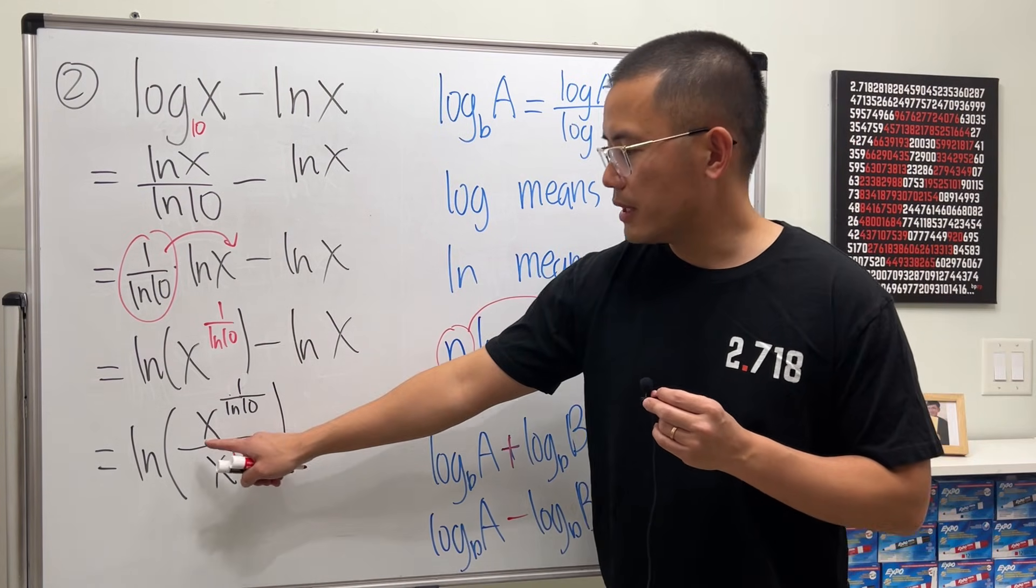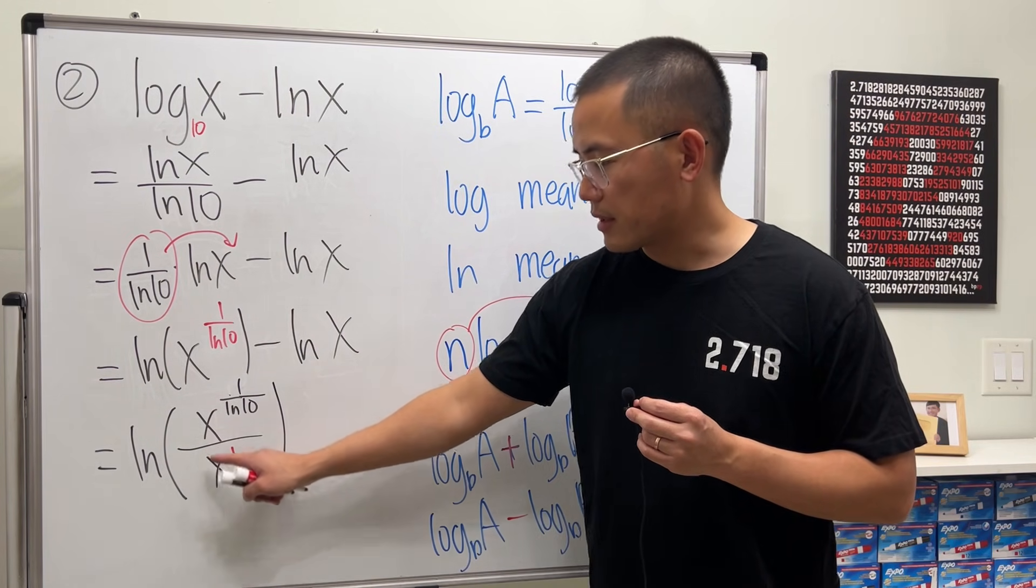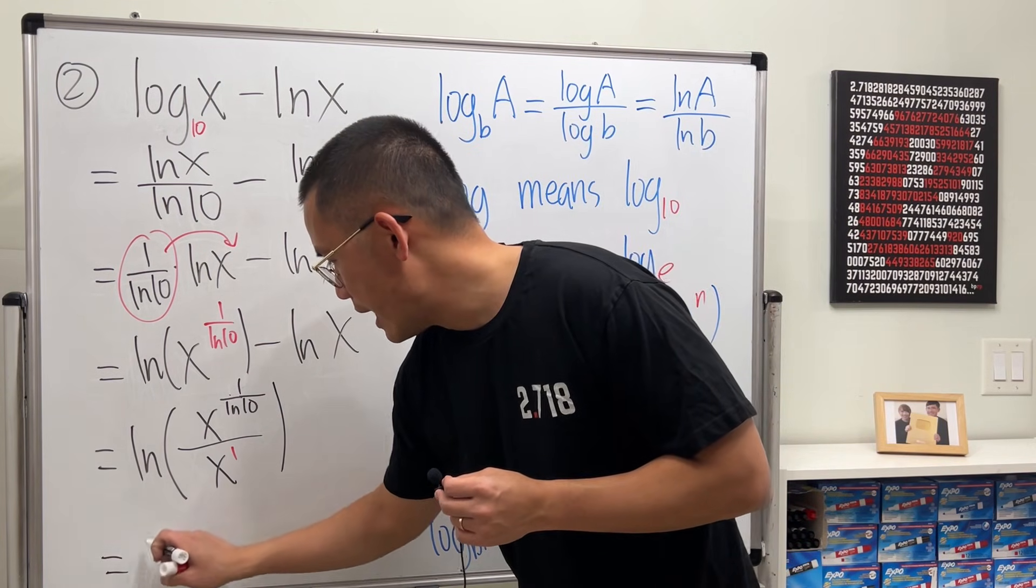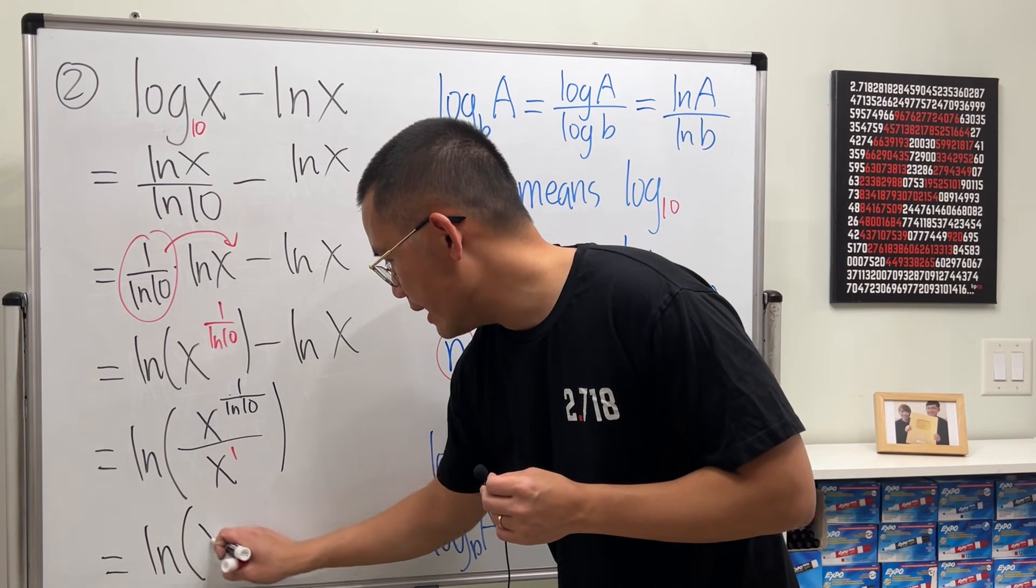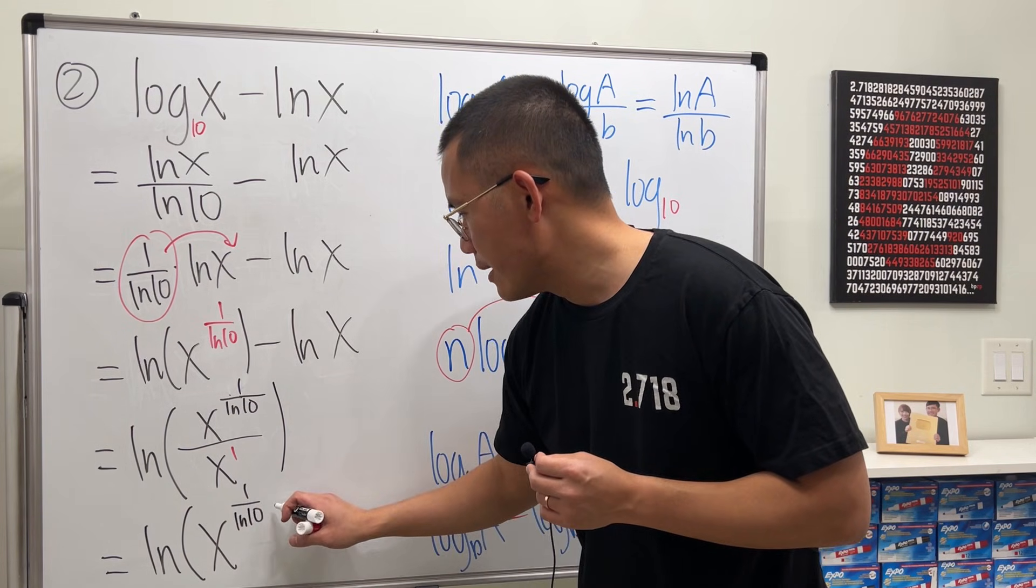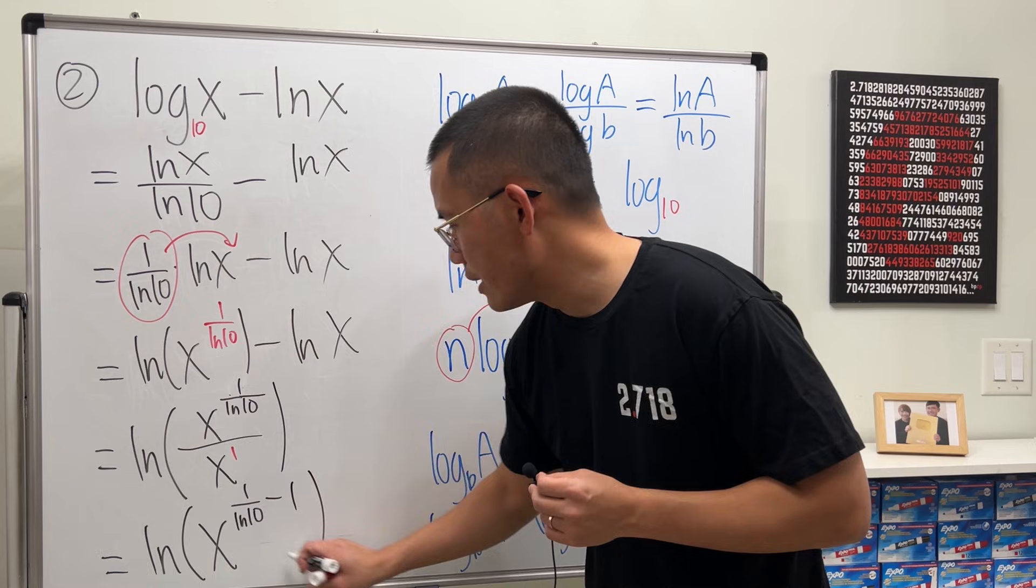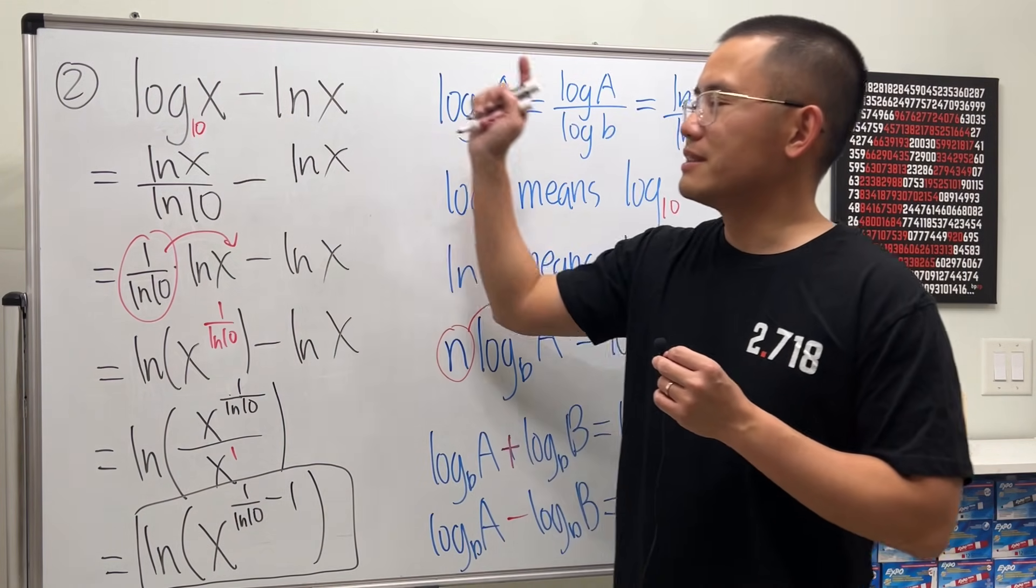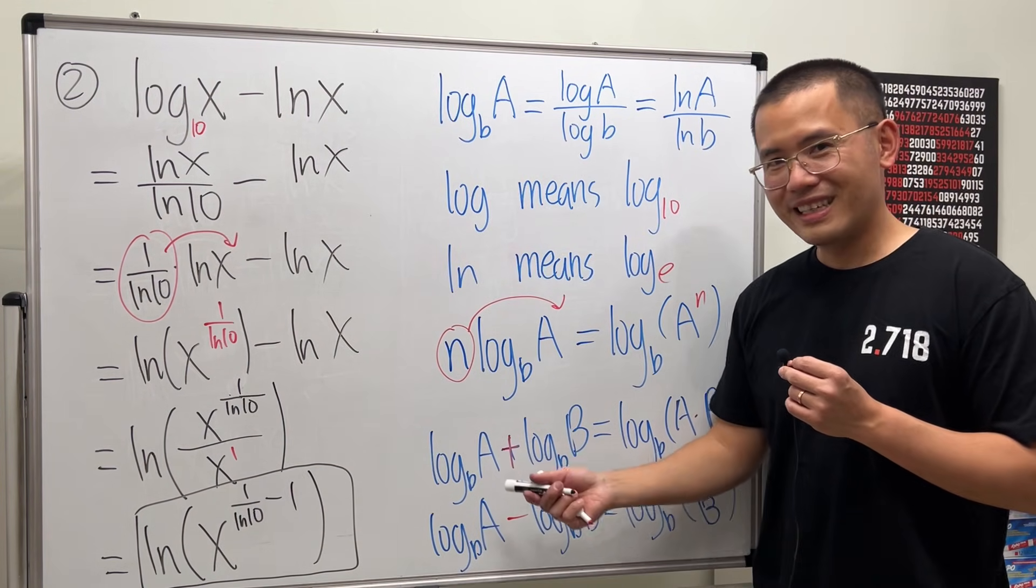So finally, because this time the x and x are the same, we can just do the rule of exponents, which is this minus that. So I will write ln of x to the 1 over ln 10 minus 1. This is how we can combine log of x minus ln of x. That's it.